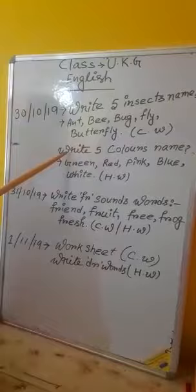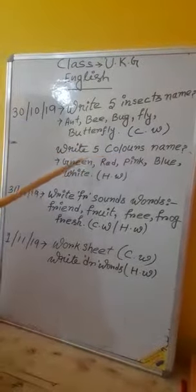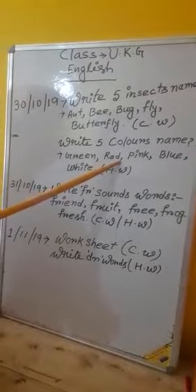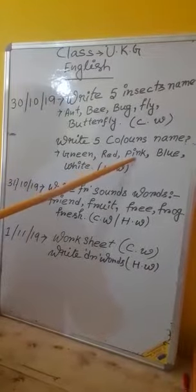Classwork. Write 5 color names. Green: G, R, E, E, N - Green. Red: R, E, D - Red. Pink: P, I, N, K - Pink.